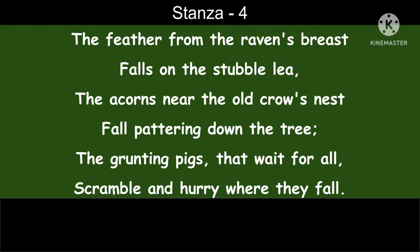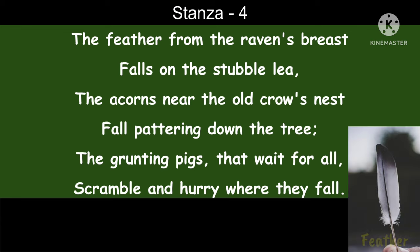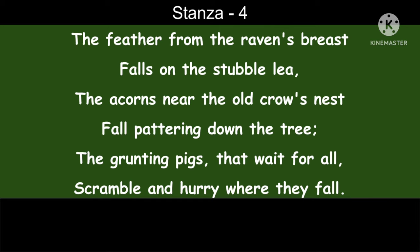Now begin with the first line: 'The feather from the raven's breast.' Raven is like a crow but it is bigger than a common crow — it is a large black bird. From the raven's breast, feathers are falling. These feathers are falling on the stubble lea.